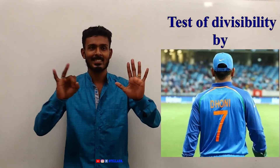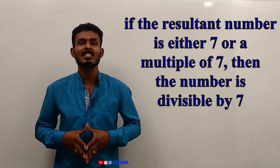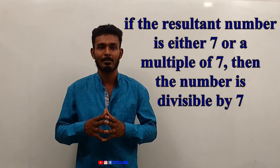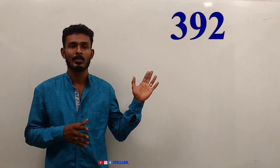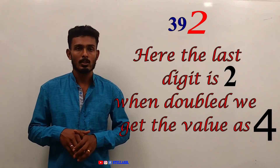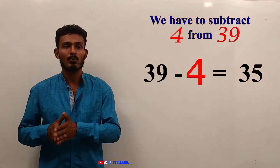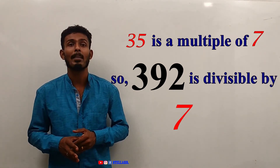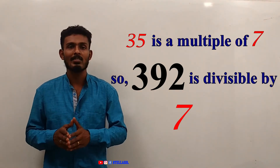Test of Divisibility by 7. Take the last digit of the number, double it, then subtract the doubled number from the remaining digits. If the resultant number is either 7 or a multiple of 7, then the number is divisible by 7. Let us take 392. The last digit is 2. When doubled, we get 4. We subtract 4 from 39 and get 35, which is a multiple of 7. So 392 is divisible by 7.